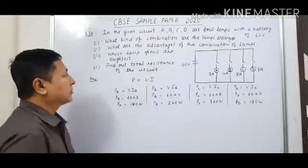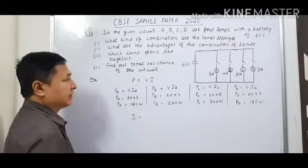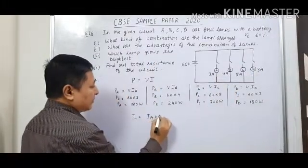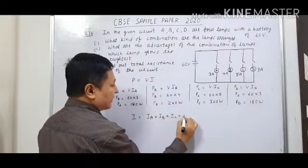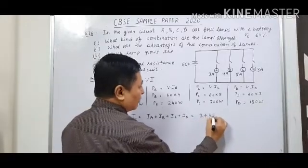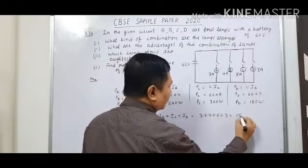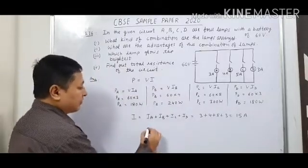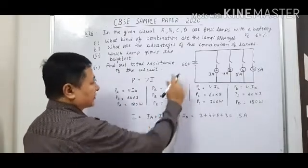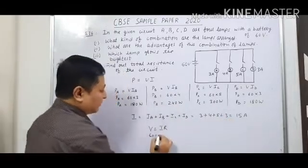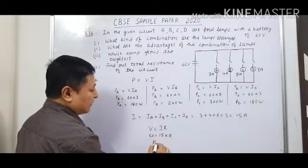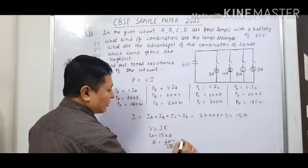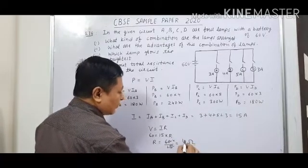The fourth question is to find the total resistance. First, calculate total current: I = IA + IB + IC + ID = 3 + 4 + 5 + 3 = 15 ampere. Using V = IR: 60 = 15 × R, so R = 60/15 = 4 ohm. The total resistance of the circuit is 4 ohm.